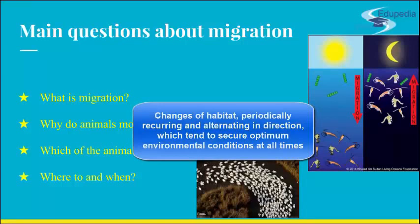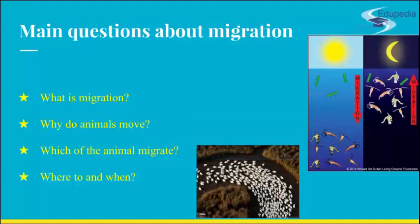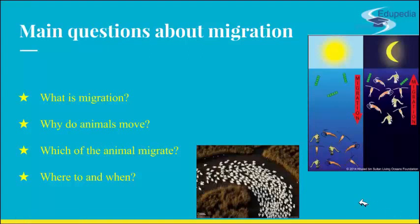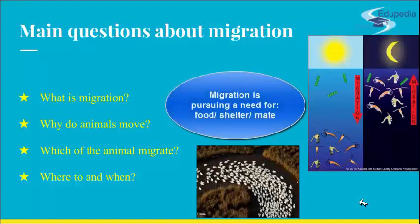The most reasonable definition, at least by my view, would be from a certain Thompson scientist who said that true migration is changes of habitat, periodically recurring and alternating in direction, which tend to secure optimum environmental conditions at all times. To answer why animals move — that is something we can define with certainty. Animals by migration are pursuing the need for food, shelter, or mate.